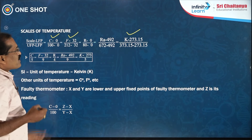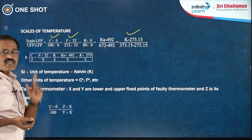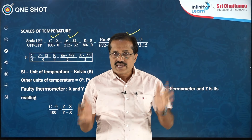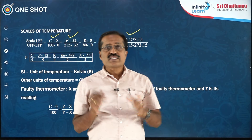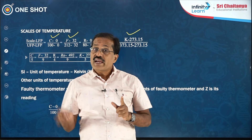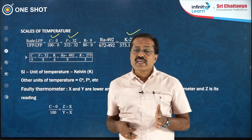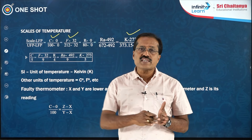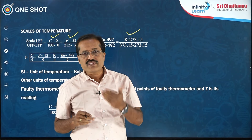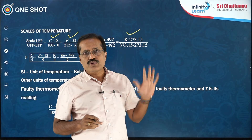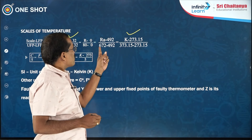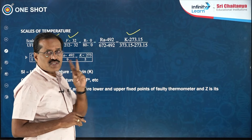First, we will see what the formulae are that you should learn during this revision time. The use of this formula is: when the Celsius scale temperature is given — for example, if the temperature is 30 degrees Celsius, what is the corresponding value in Fahrenheit? Second, if in 30 minutes the temperature increased from 30 to 35 degrees Celsius, what is the corresponding increase in Fahrenheit and Kelvin? Normally we do not have questions based on Réaumur or Rankine scales.